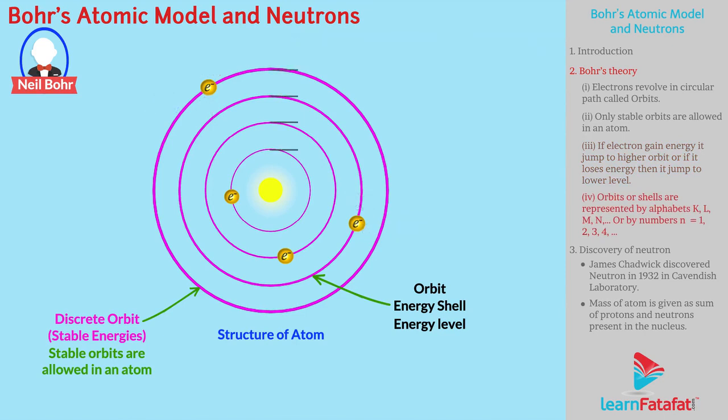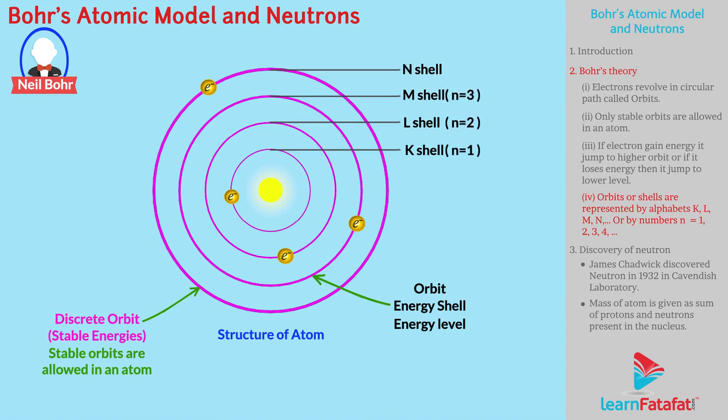Orbits or shells are represented by alphabets K, L, M, N, or also by numbers where N equals 1, 2, 3, 4.